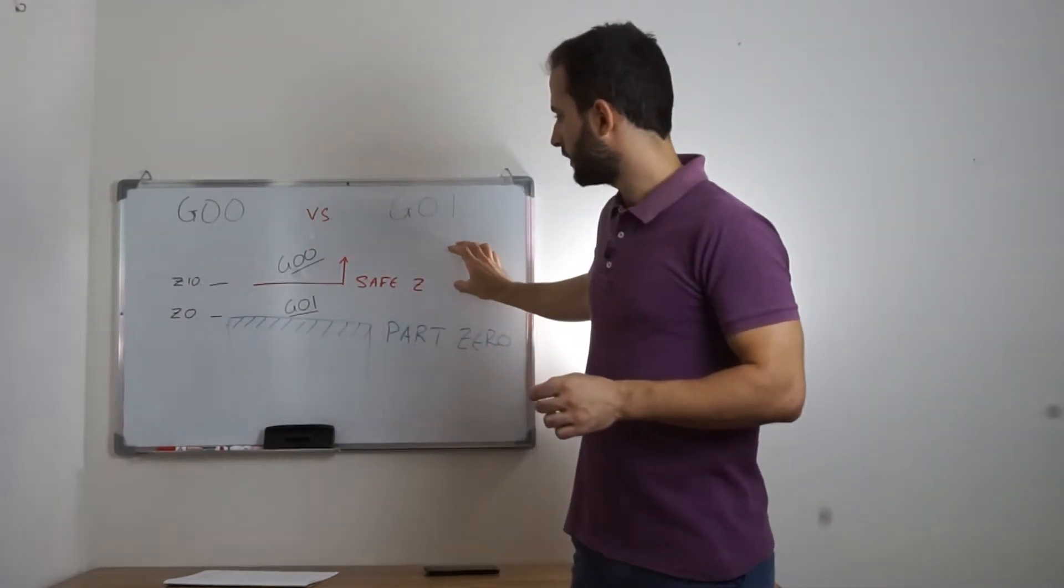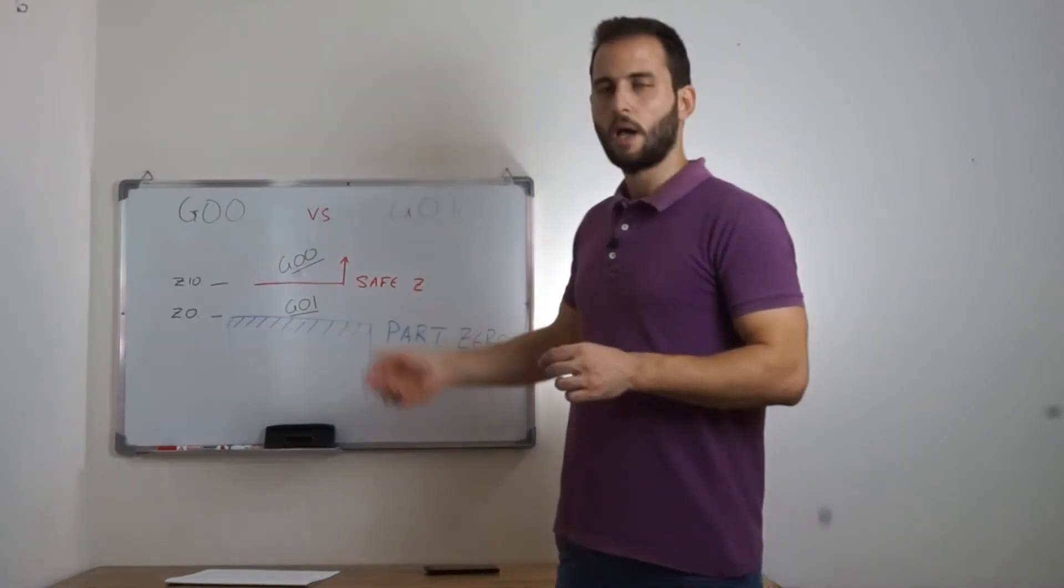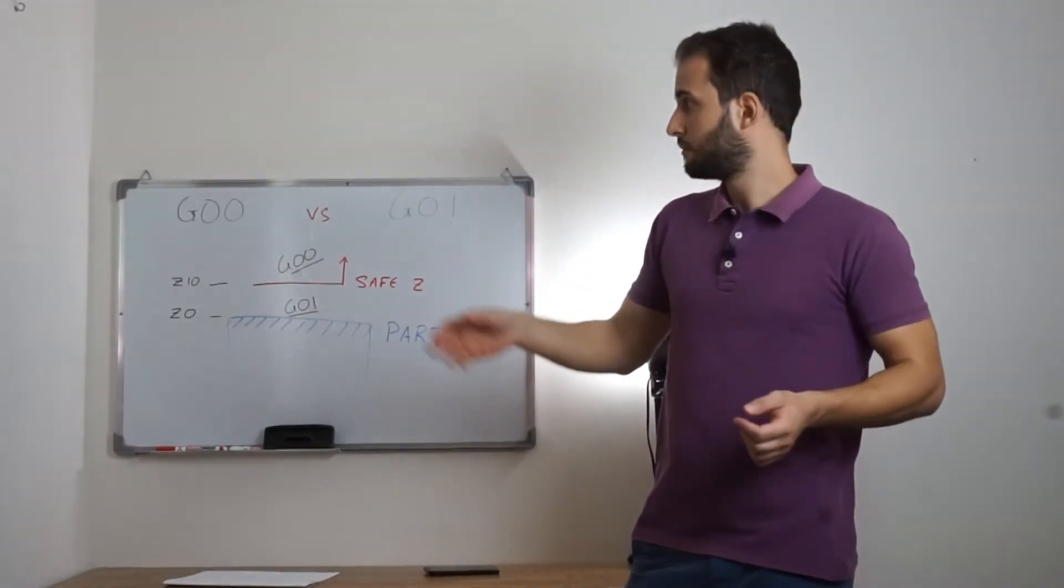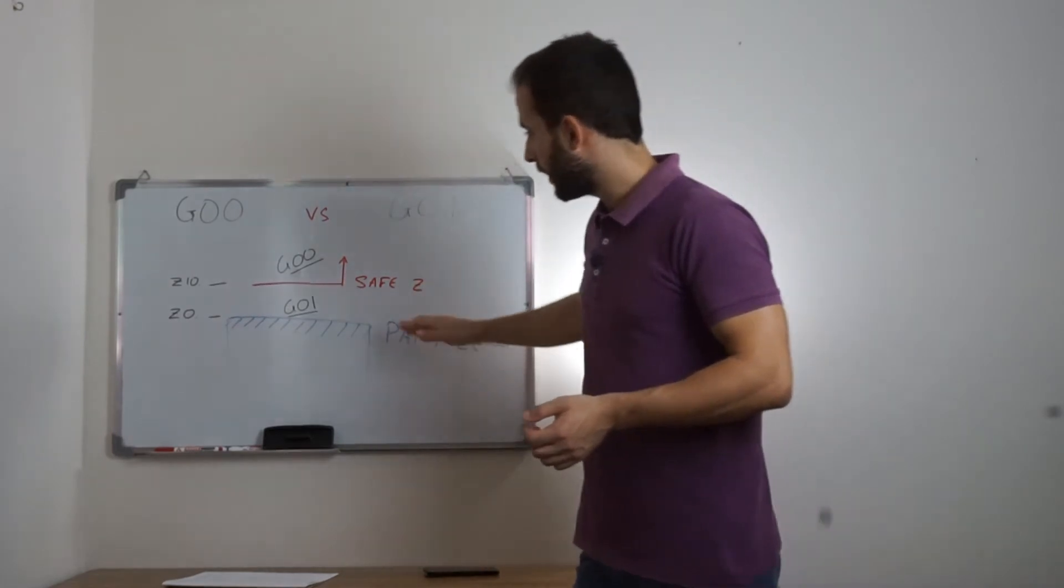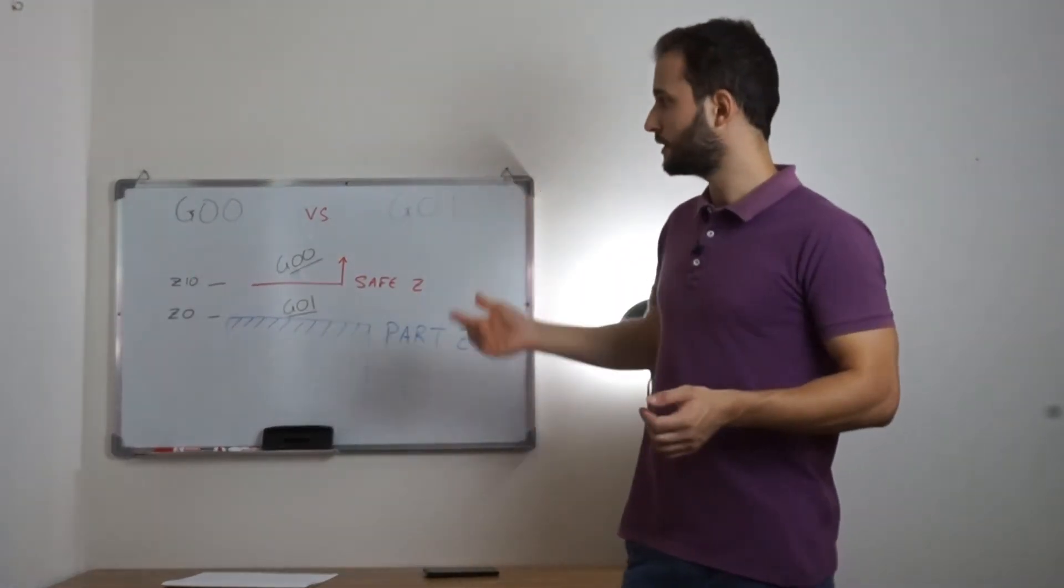For every movement that is above 10 mm, I can use safely G0. Whenever I go below 10 mm, I start considering programming G01.